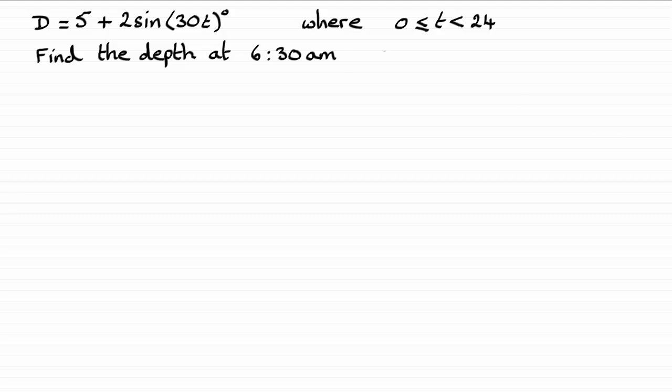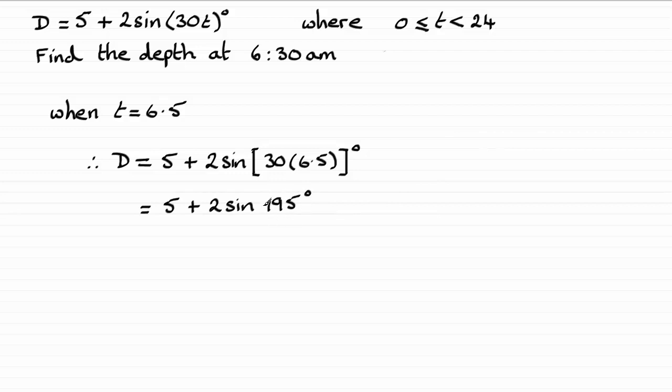OK, so if you do that, let's say when t equals 6.5, substitute it in, you're going to get d equals 5 plus 2 sine of 30 times 6.5. That comes out to the sine of 195 degrees here.